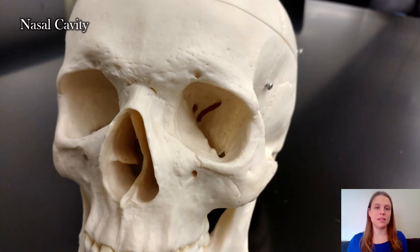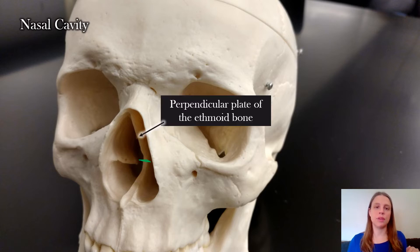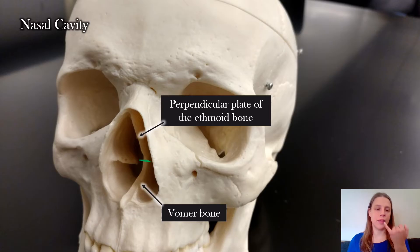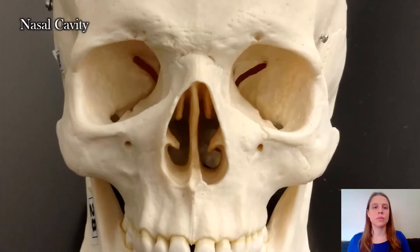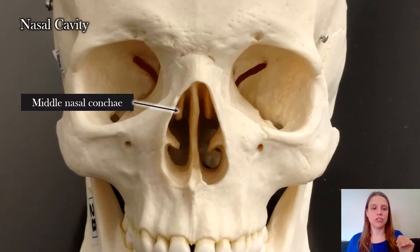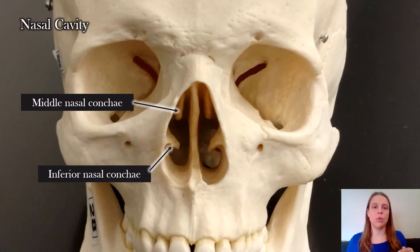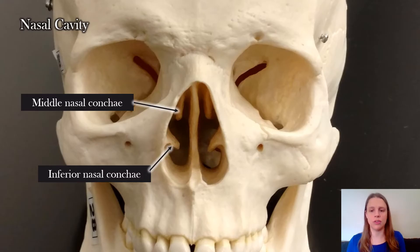Looking at the inside of the nasal cavity, you can see what looks like a wall of bone, which is actually two separate structures. The top half is the perpendicular plate of the ethmoid bone and the bottom half is the vomer bone. Following the vomer bone out, there's a little point which is the anterior nasal spine. Looking at the nasal cavity straight on, you can see the middle nasal concha and the inferior nasal concha, which are structures that help the air tumble as it enters your nose so it's more exposed to surface area and can become warm and humidified before it enters your lungs.